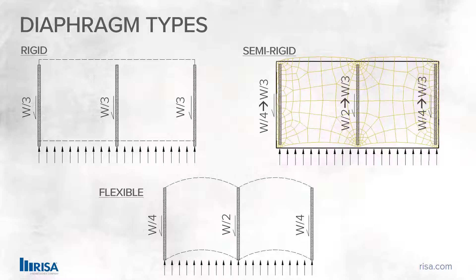The second type is our flexible diaphragm, which is quite the opposite from a rigid diaphragm — it has no stiffness. The load is distributed not based on any stiffness in the member itself, but on a tributary area or tributary width, regardless of the stiffness of the elements that are connected to it.